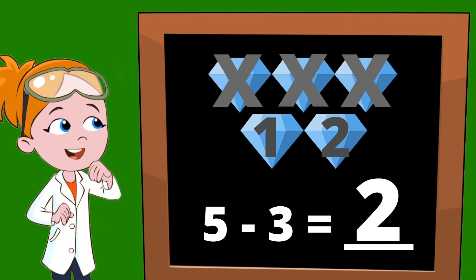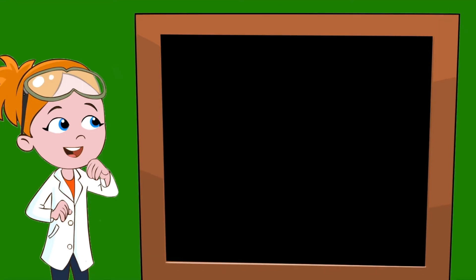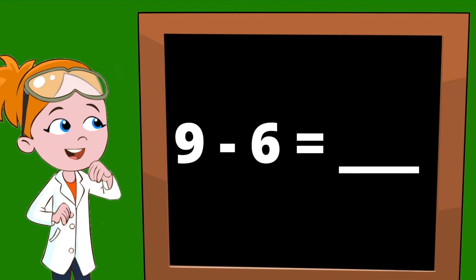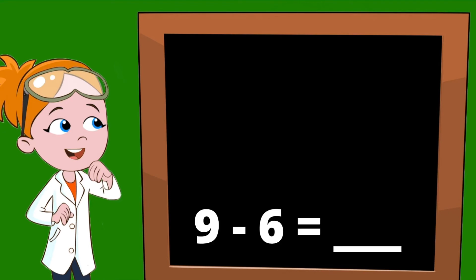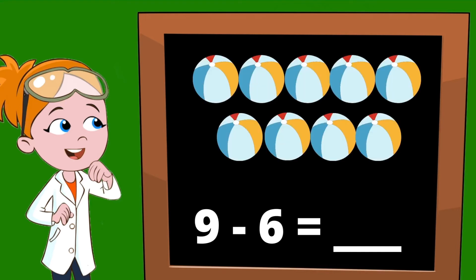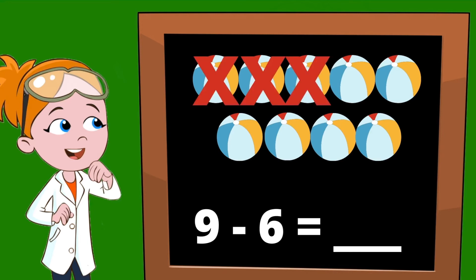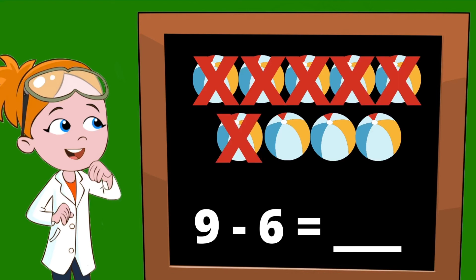Wow, you're getting great at doing subtraction. Let's do one more. How about 9 minus 6? Ooh, those are big numbers. This time, let's count beach balls. Our equation says we need to start with 9 beach balls. We need to subtract 6, so let's put 6 X's through the beach balls. 1, 2, 3, 4, 5, 6.